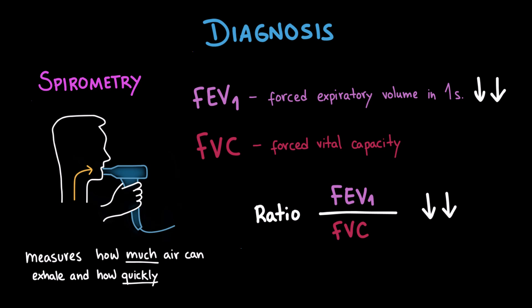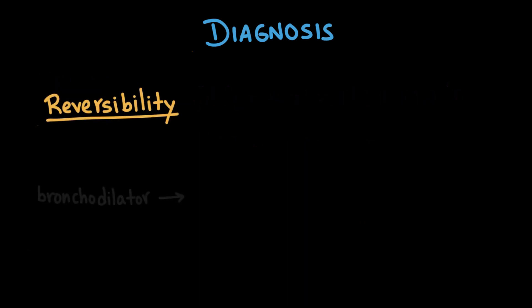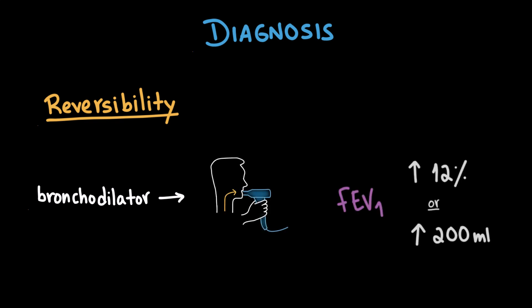Now, the hallmark of asthma is reversibility. To test this, the patient inhales a bronchodilator, such as salbutamol, and then the spirometry is repeated. If the FEV1 improves by at least 12% or 200 milliliters from baseline, this strongly supports the diagnosis of asthma. So, in summary, asthma is diagnosed by combining characteristic symptoms, evidence of variable airflow limitation on spirometry, and reversibility after bronchodilation.